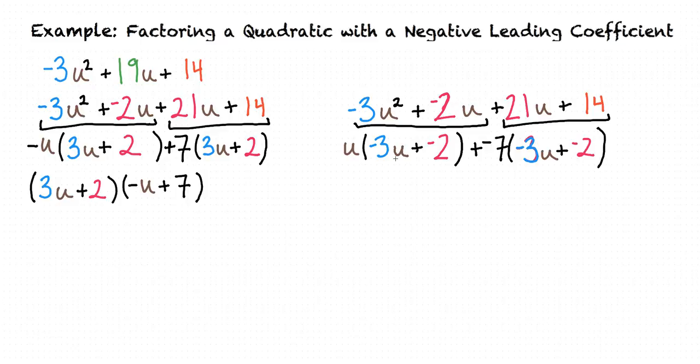Now we can factor out (-3u + -2), similar to what we did before, and that leaves us with a final answer of (-3u + -2) times (u - 7).